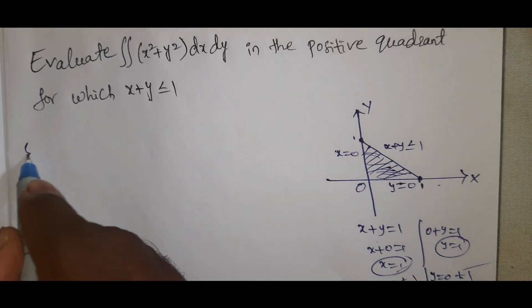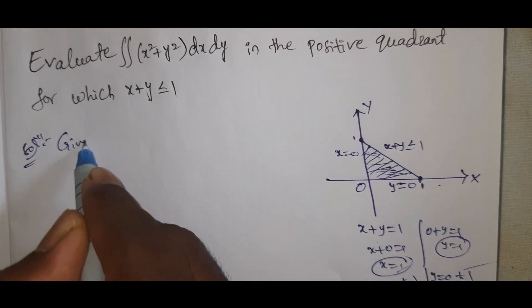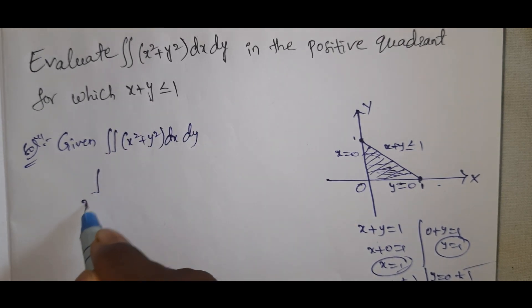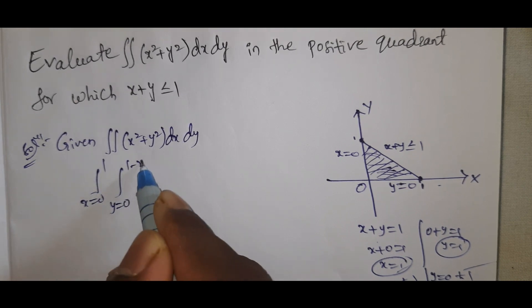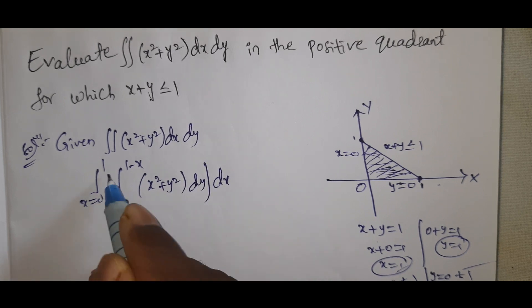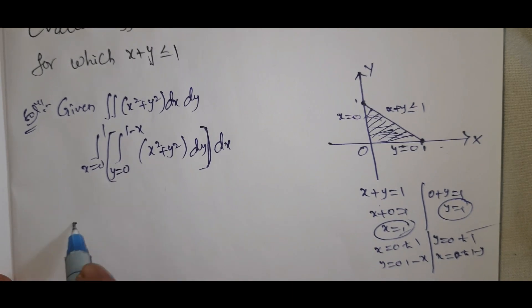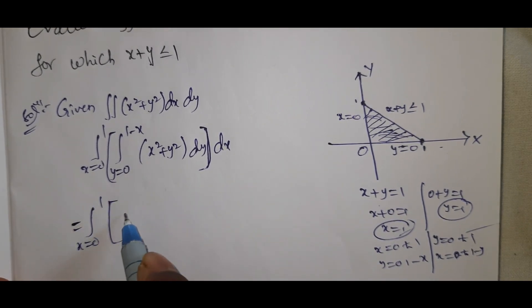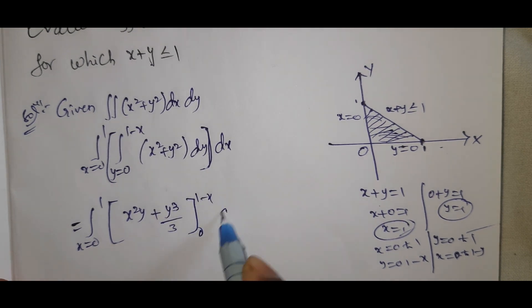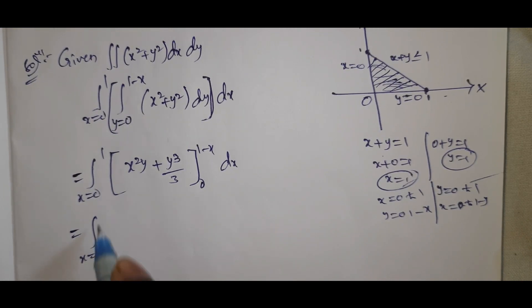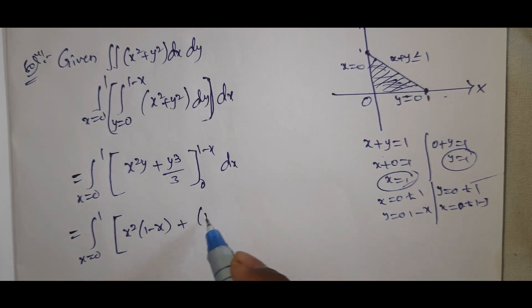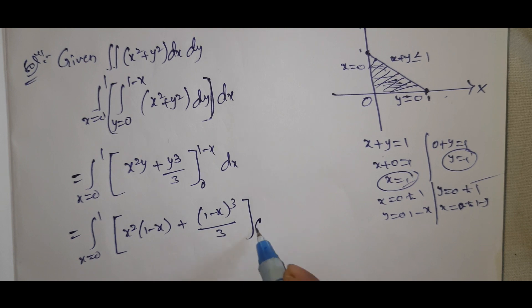Solution: given the double integral of x² + y² dx dy, with x from 0 to 1 and y from 0 to 1 − x, this becomes the integral from x = 0 to 1 of the integral of x² + y² dy dx. Integrating with respect to y gives x²y + y³/3, evaluated from 0 to 1 − x.